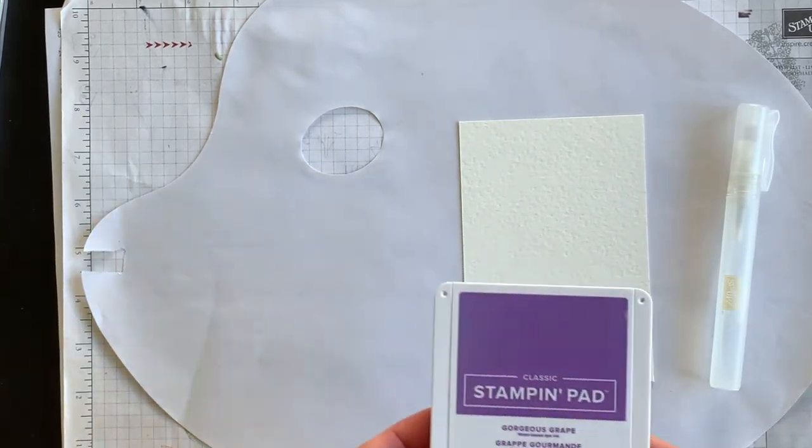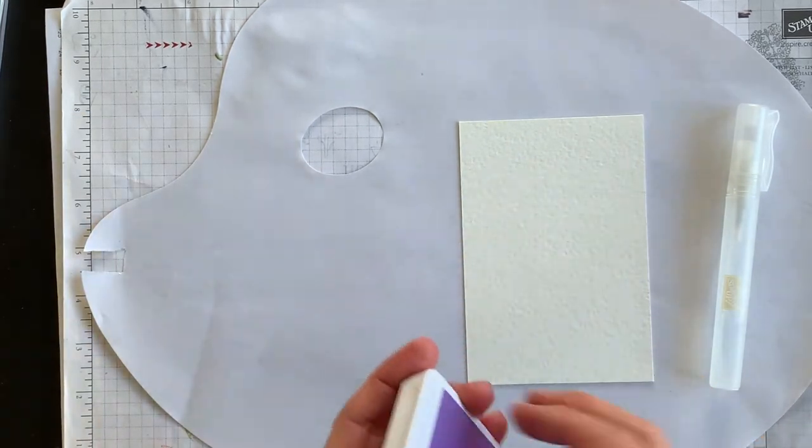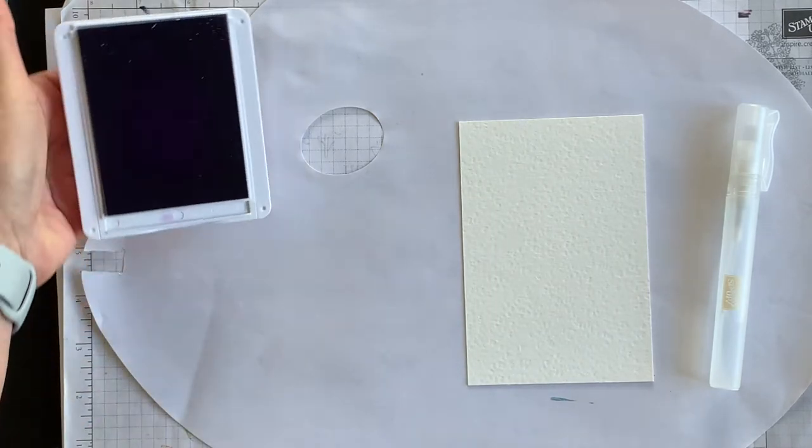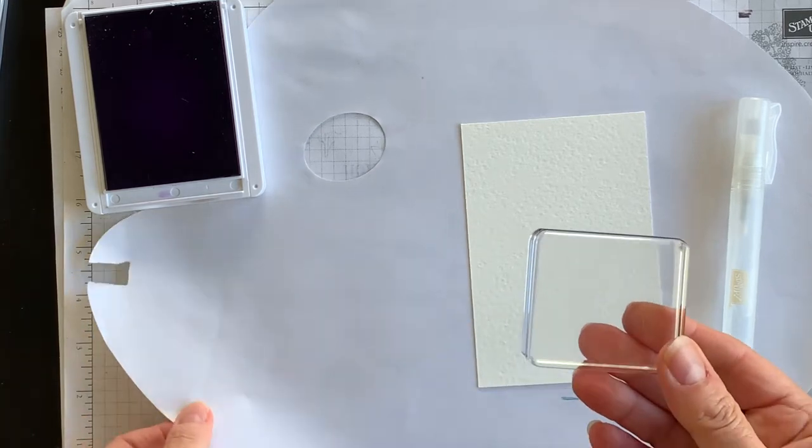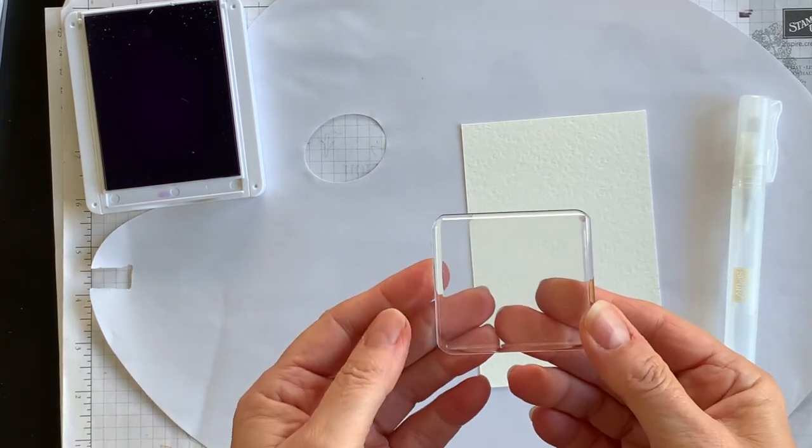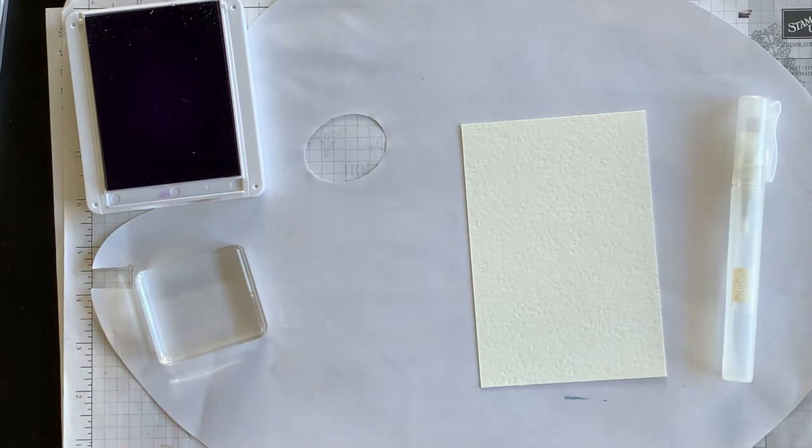Then I'm going to bring in my Gorgeous Grape ink, open that up and get that ready to go, and then I have a clear block—you can use any size of clear block, doesn't really matter.